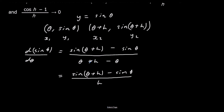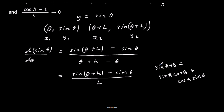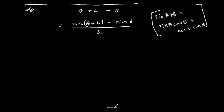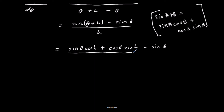We use the sine(a + b) formula: sin(a + b) = sin a cos b + cos a sin b. So sine(theta + h) becomes sine theta cos h + cos theta sine h. We still have the minus sine theta, all over h.